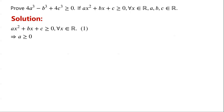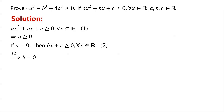We will divide the problem into two cases: a equals zero, or a is greater than zero. If a equals zero, then inequality 1 becomes bx plus c is greater than or equal to zero, and this holds for all x being real numbers. Then we can prove that b must equal zero. We assume that b does not equal zero. Substitute x equals 1 and x equals 2 in inequality 2.